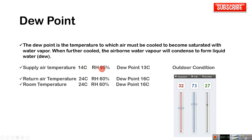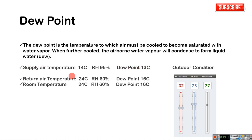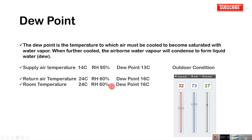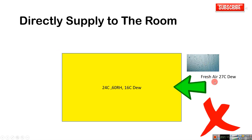The return air temperature is 24°C, RH 60%, and dew point 16°C. The room temperature is 24°C, RH 60%, and dew point 16°C. This is one of the wrong practices — directly supplying fresh air to the room.